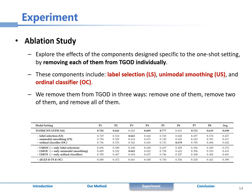Then, we explore the effects of the components designed specific to one-shot setting by removing each of them from TGOD individually. These components include label selection, unimodal smoothing, and ordinal classifier.